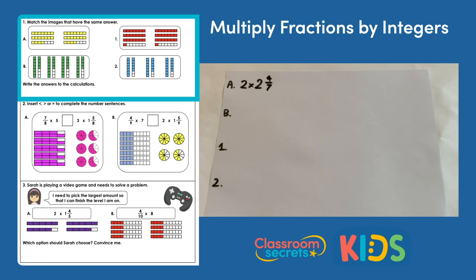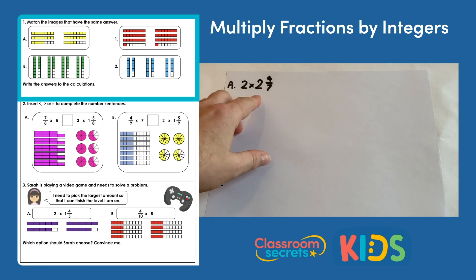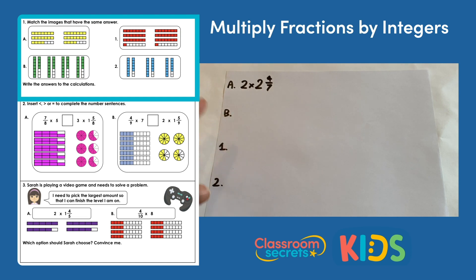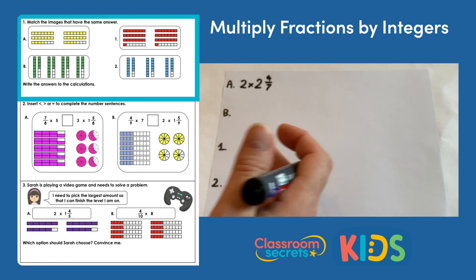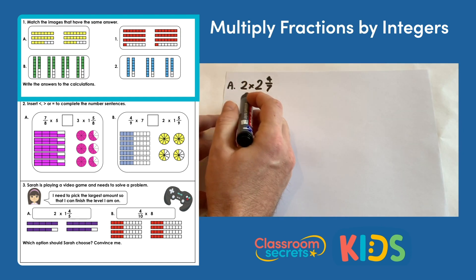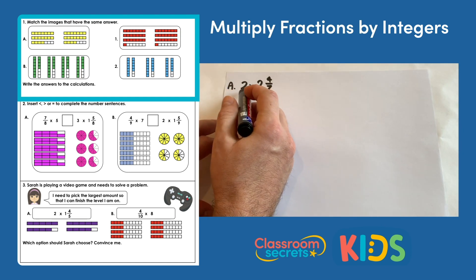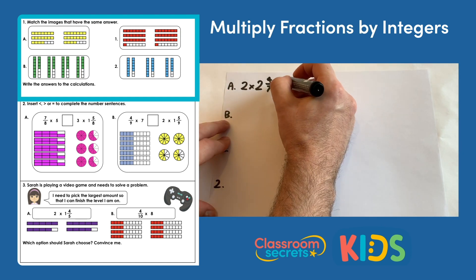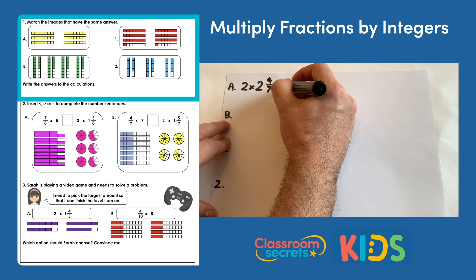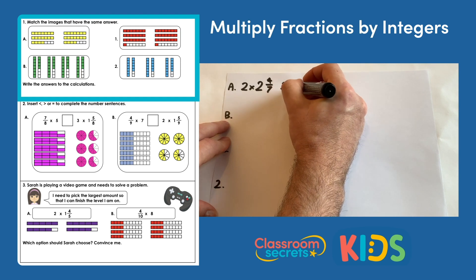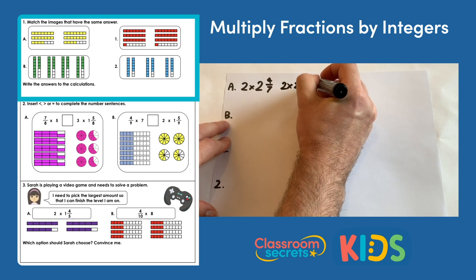What I'm going to do is work through the multiplications. I'm going to multiply the whole numbers first and then multiply the fraction part and recombine at the end. So we have two lots of two, so the first calculation will be two multiplied by two, which will be four.